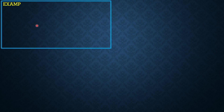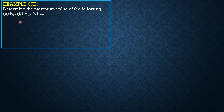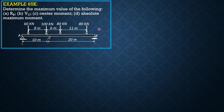So, determine the maximum value of the following: reaction at B, shear at C, moment at center, and absolute maximum moment. We have here the loads, and the distance between the leftmost and rightmost load is 14. This span is 25 meters and this one is 30 meters.